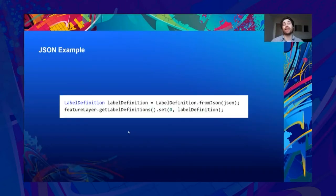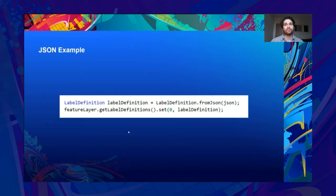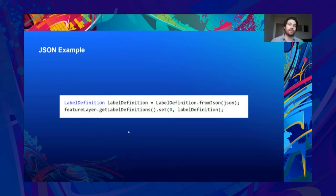Now let's look at how we achieve this practically in code. All we need to do is create a new label definition, creating it from JSON. We call the fromJSON method, passing in our JSON string. Then we set the label definition into the feature layer we are working on — in this case it's index zero because we are replacing the label definition instead of adding one. It's important to remember that the label definition is immutable, so a copy would first have to be assigned before making changes and pushing it back into the label definition.